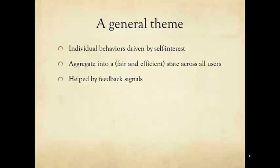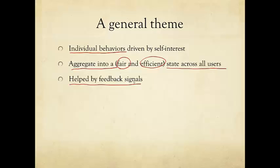A general theme recurring in almost every lecture in this course is that we will see individual behaviors, often driven by self-interest, aggregate into a state across all users — a global configuration in social, economic, or technological networks. Sometimes it can aggregate into a fair and efficient configuration. This phenomenon is helped by feedback signals, which could be a pricing signal, a congestion signal, or a collision signal.